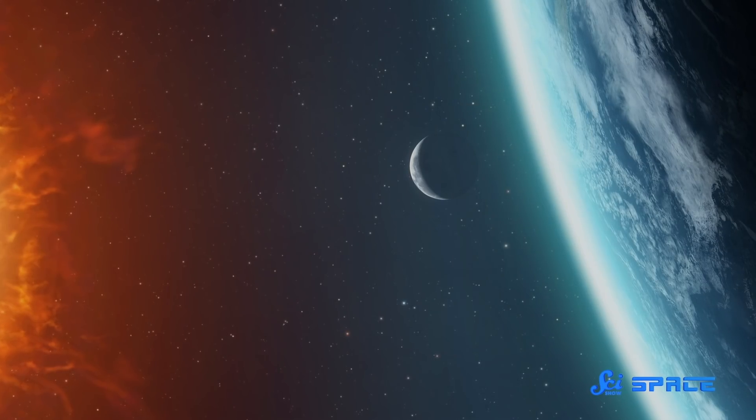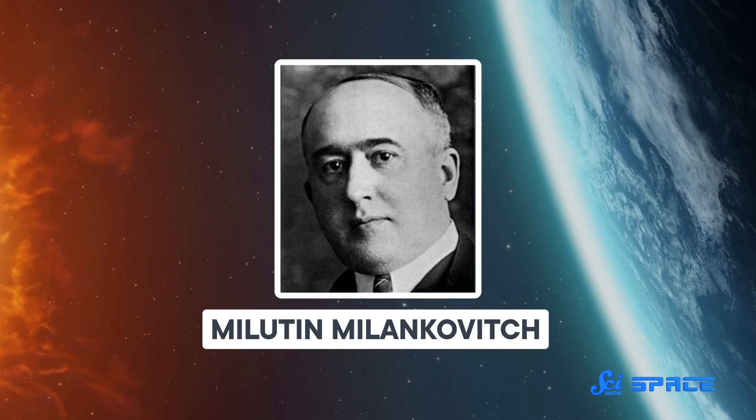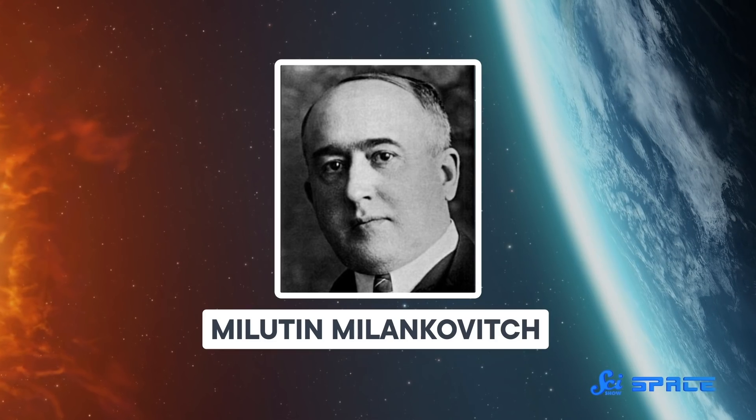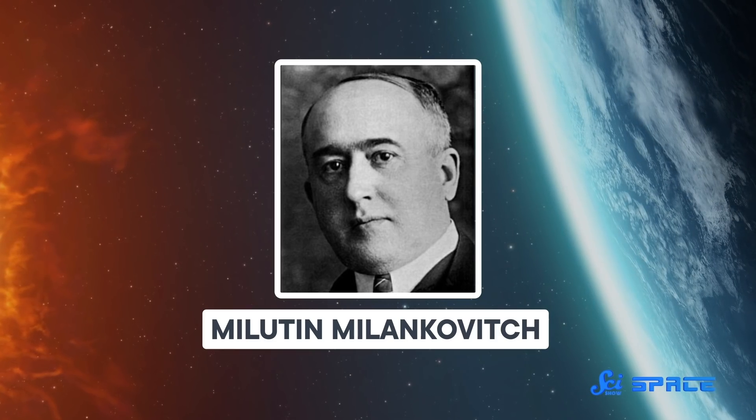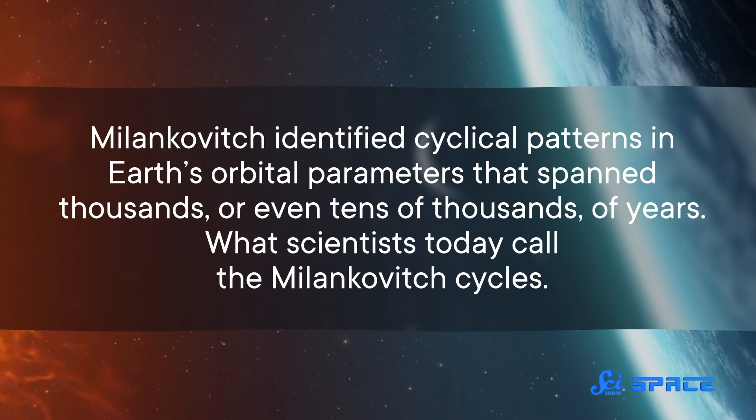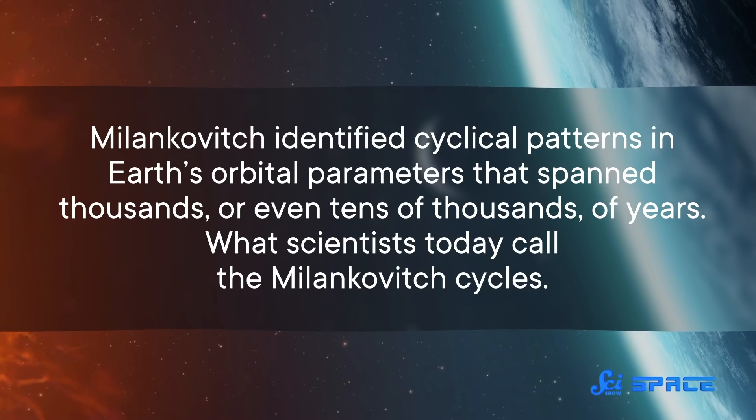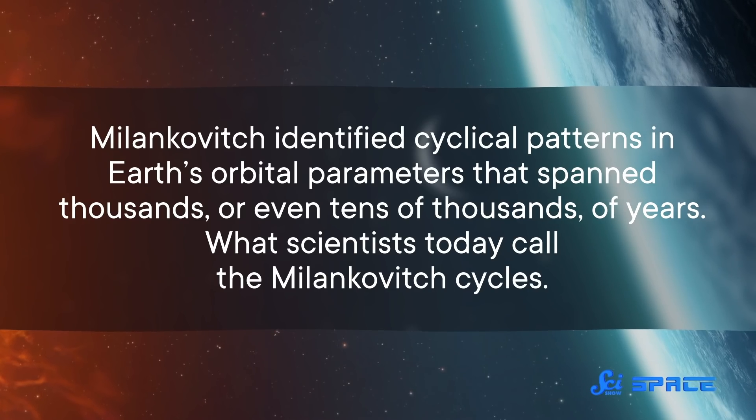Our modern understanding of their connection dates back to 1911, when Serbian mathematician Milutin Milankovic began comparing the timing of past ice ages to the position and orientation of the Earth. He identified cyclical patterns in Earth's orbital parameters that spanned thousands or even tens of thousands of years — what scientists today call the Milankovic Cycles.